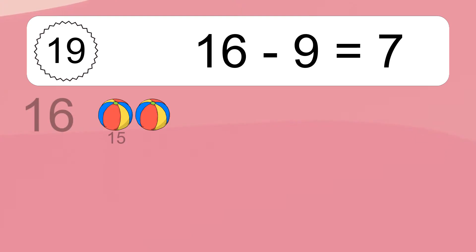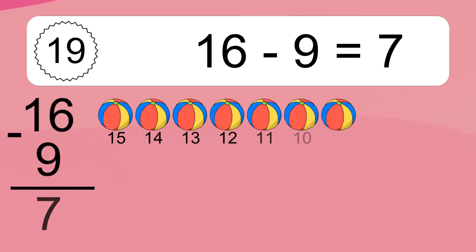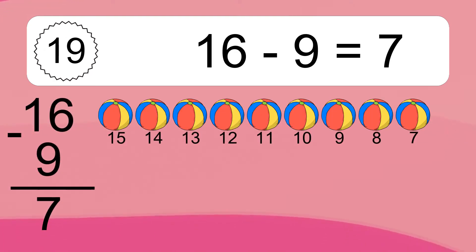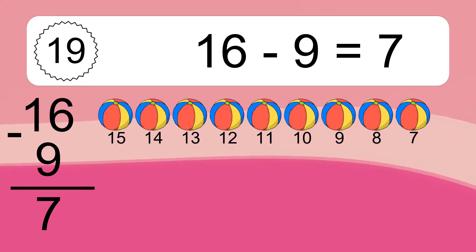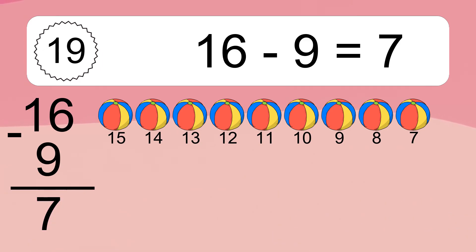16 minus 9 equals what? 16 minus 9 equals 7. Let's count it: 15, 14, 13, 12, 11, 10, 9, 8, 7.